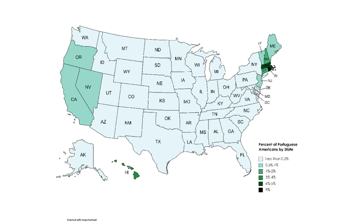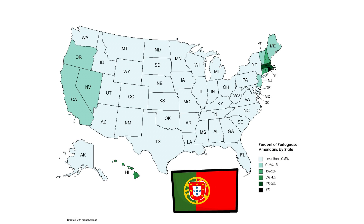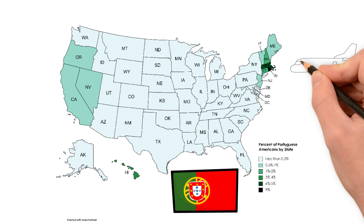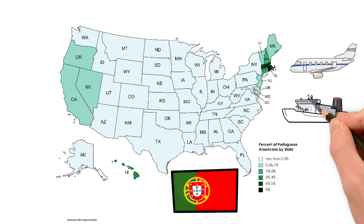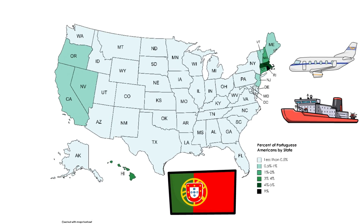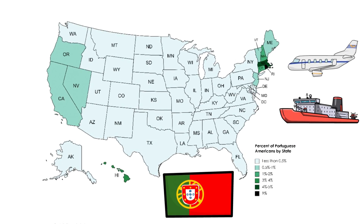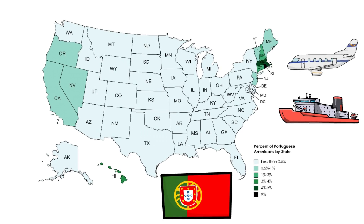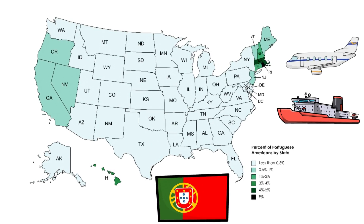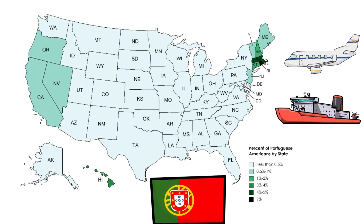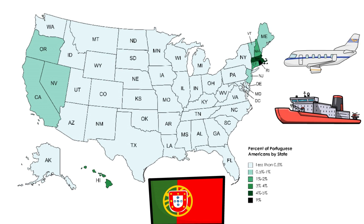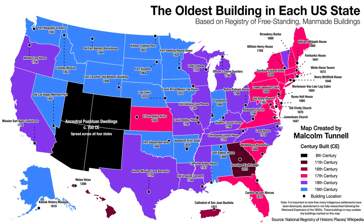Portugal is also a Catholic country, and in this other map we can see the percentage of Portuguese Americans by state — which may actually explain why the upper east coast has high Catholicism levels. Rhode Island has the largest percentage at 9% of the population being Portuguese. Massachusetts is next with around 5%, along with surrounding states. On the west coast, California, Nevada, and Oregon each have up to 1%, and Hawaii surprised me with at least 3% of its residents being of Portuguese origin.